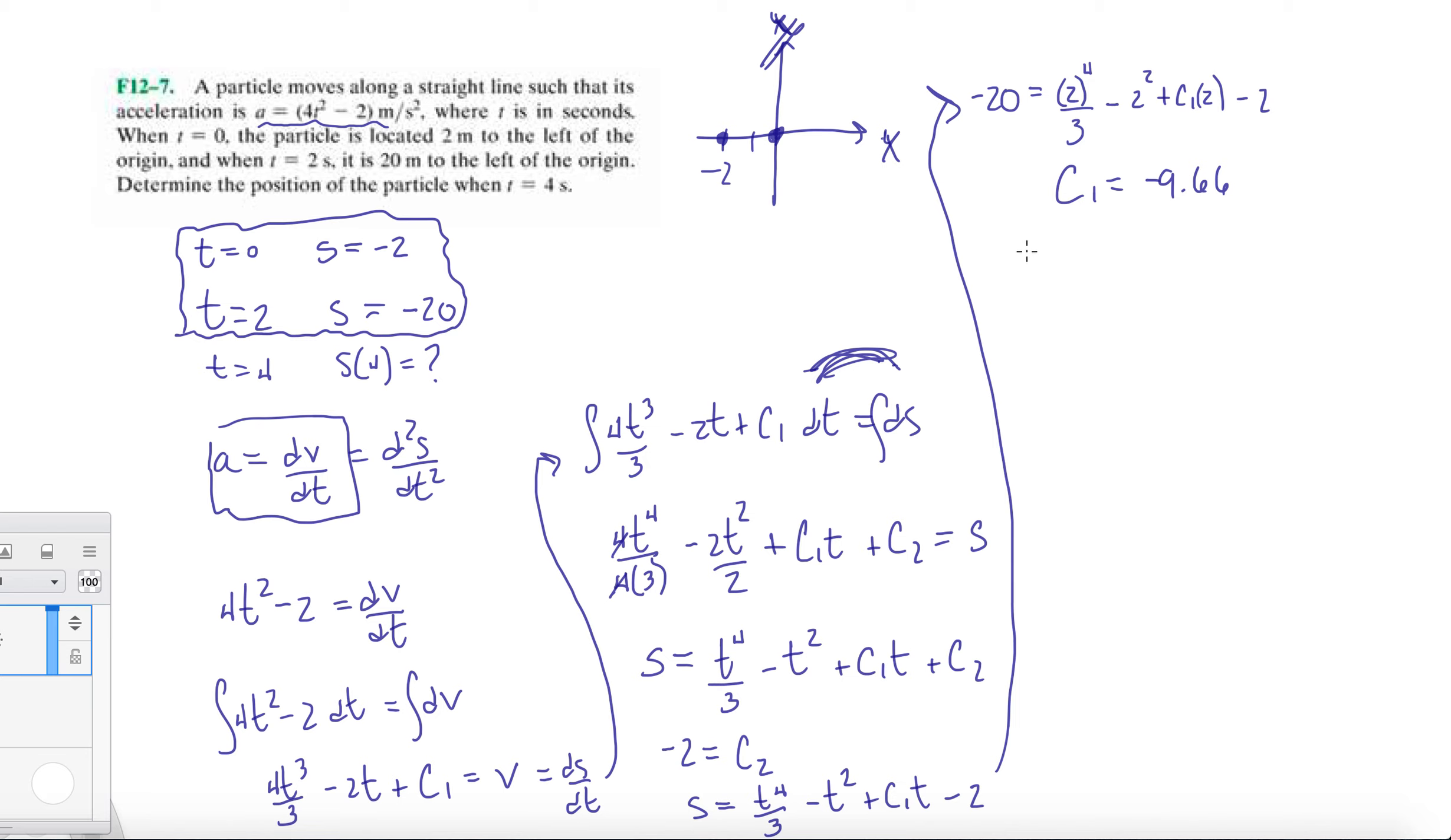Now we have our total equation, our total position function, which is going to be t to the 4th over 3 minus t squared minus 9.66t minus 2. So now we have our actual function written down. And now we just want to get the position of the particle when t equals 4. So we're just going to plug in 4, wherever you see a t. And we should end up getting about 28.69 meters.